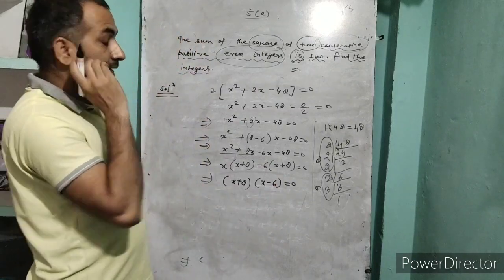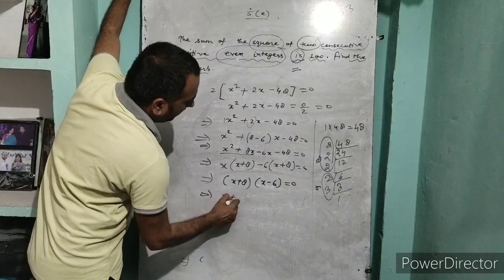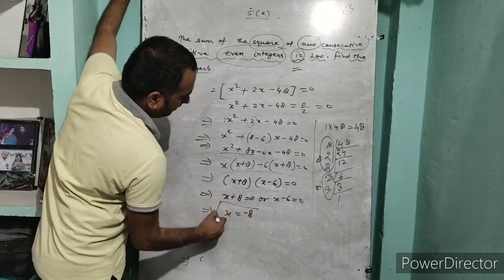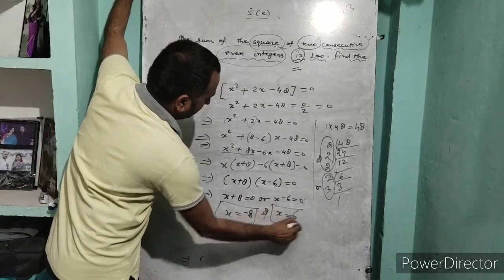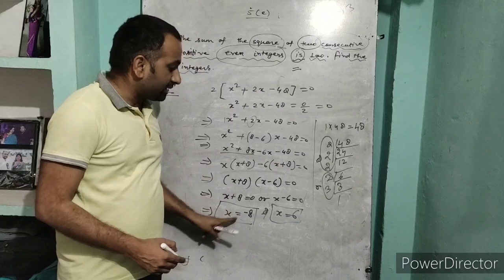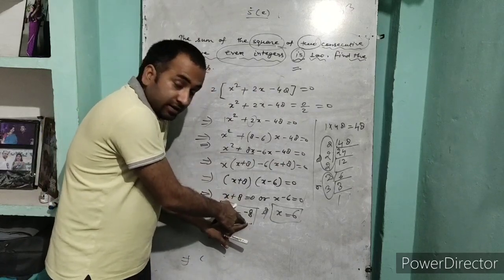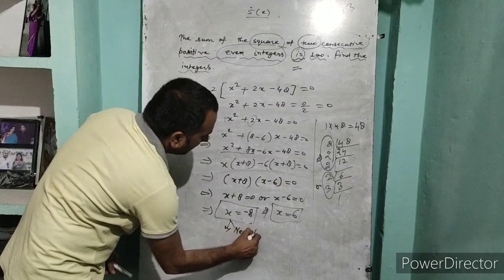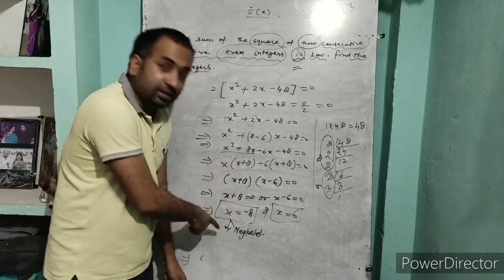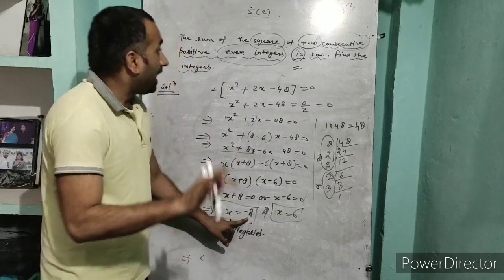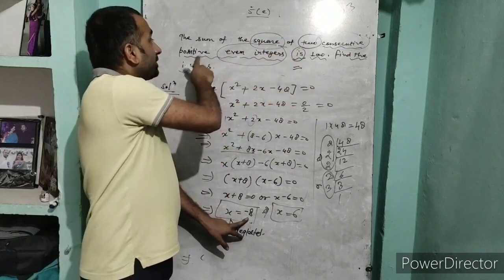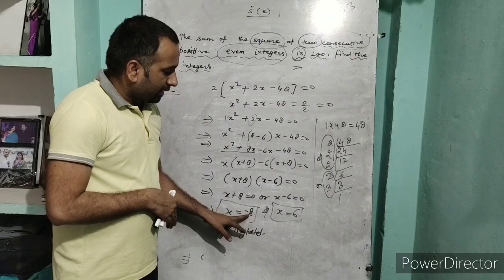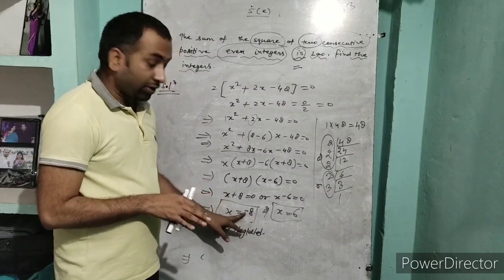The roots of the quadratic equation are x = -8 and x = 6. Now, x = -8 is a negative even integer. But the question requires positive even integers, so we neglect x = -8. Therefore x = 6.